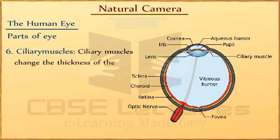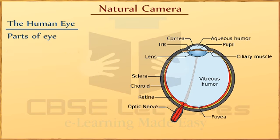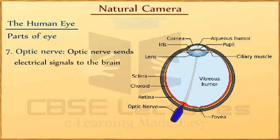Ciliary Muscles. Ciliary muscles change the thickness of the eye lens while focusing. Optic Nerves. When the image is formed on the retina, the light-sensitive cells get activated and generate electrical signals. The optic nerve sends these electrical signals to the brain.